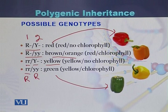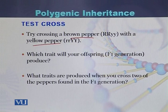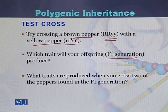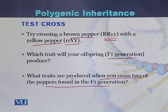Some peppers can be red, some brown or orange, some yellow, and some green. To understand this phenomenon, try a test cross between a brown pepper and a yellow pepper to see which traits appear in the F1 generation. Cross the brown pepper, which has the genotype dominant R and recessive Y for gene 1, with a yellow pepper that has recessive R and dominant Y allele. Cross these two genotypes and check what kind of F1 generation is produced and what traits appear when you cross two peppers from the F1 generation.